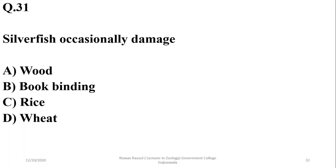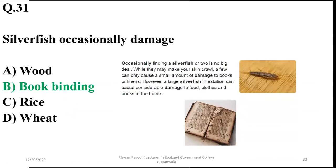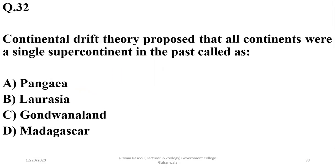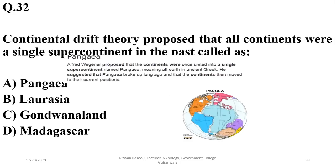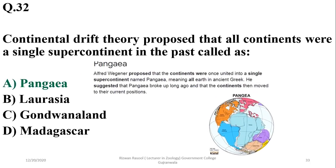Question 31: Silverfish can really damage book bindings and books, so B is the right option. Question 32: Continental Drift theory proposed that all continents were a single supercontinent in the past called Pangaea, so A is the right option.